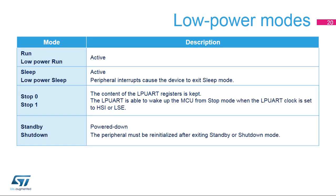The LP UART peripheral is active in run, sleep and low power modes. The LP UART interrupts cause the device to exit sleep and low power sleep modes. The LP UART is able to wake up the MCU from stop 0 and stop 1 modes when the LP UART clock is set to HSI or LSE. In standby and shutdown modes, the peripheral is in power down and it must be re-initialized after exiting standby or shutdown mode.